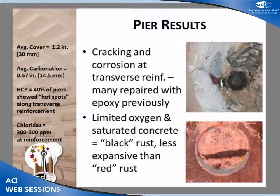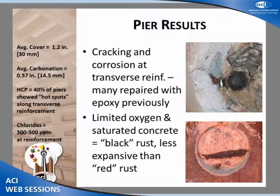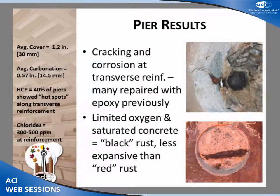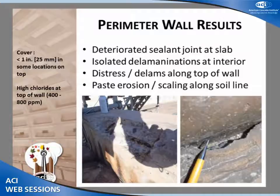The piers had corrosion. Chloride content was high, and they had the lowest cover — only about 1.2 inches — with ongoing corrosion confirmed at cores taken from the piers. Notably, we had what is called black rust as opposed to red rust. Because of the lack of oxygen and the saturated concrete, that type of rust doesn't expand as much. So we could have more ongoing corrosion with less visible surface distress because the corrosion product doesn't expand as much as typical rust — meaning no delaminations or cracking even though corrosion is ongoing.